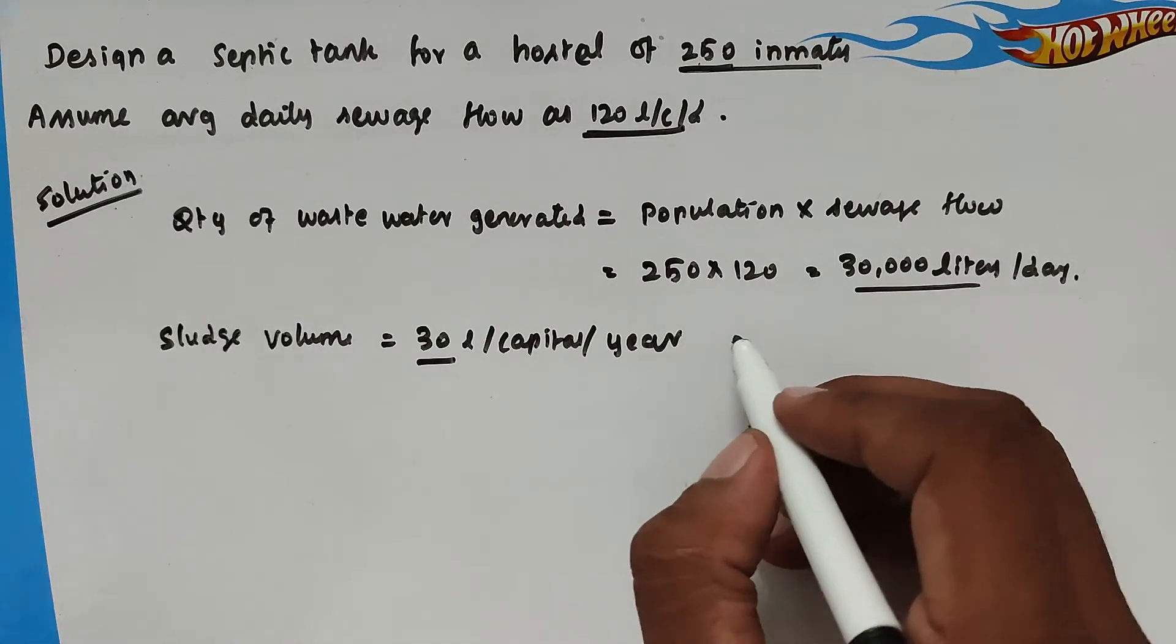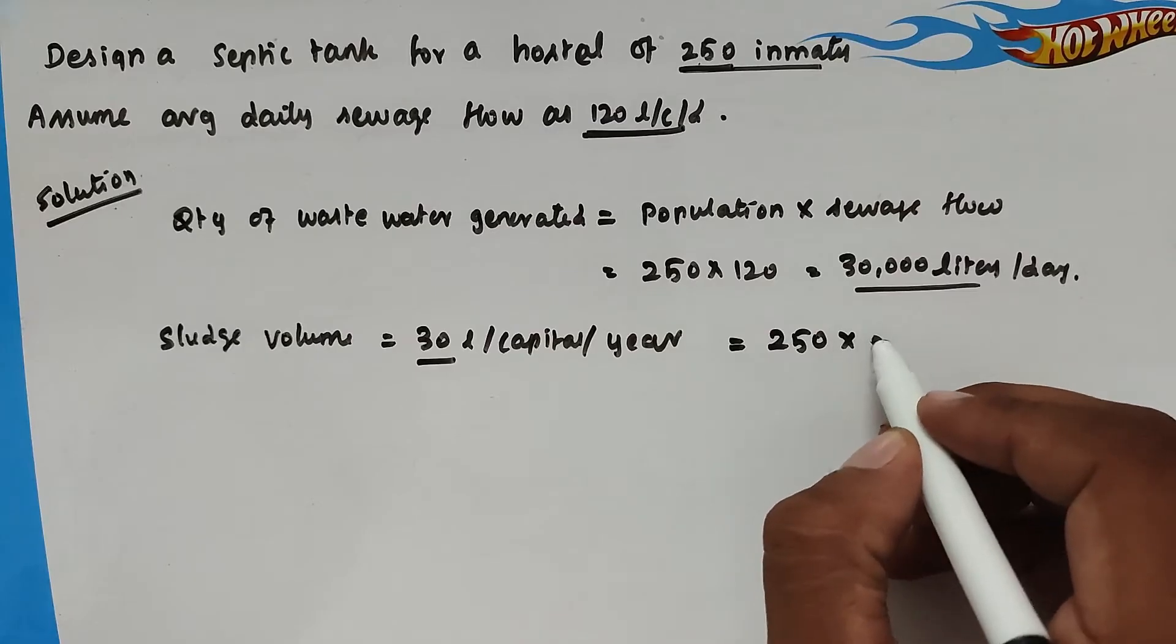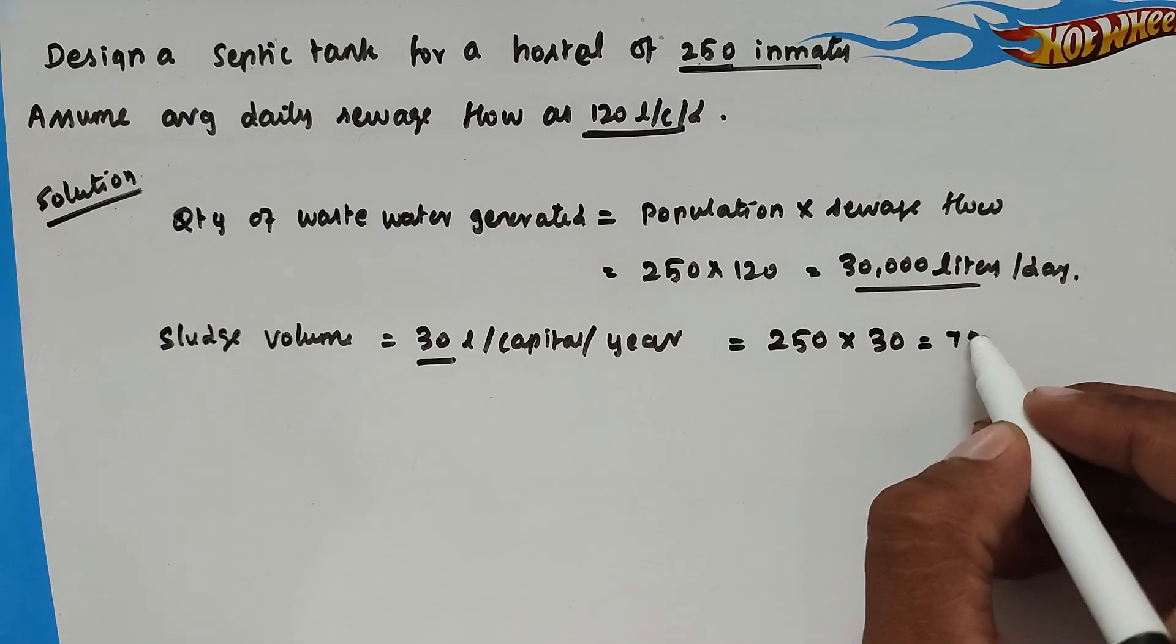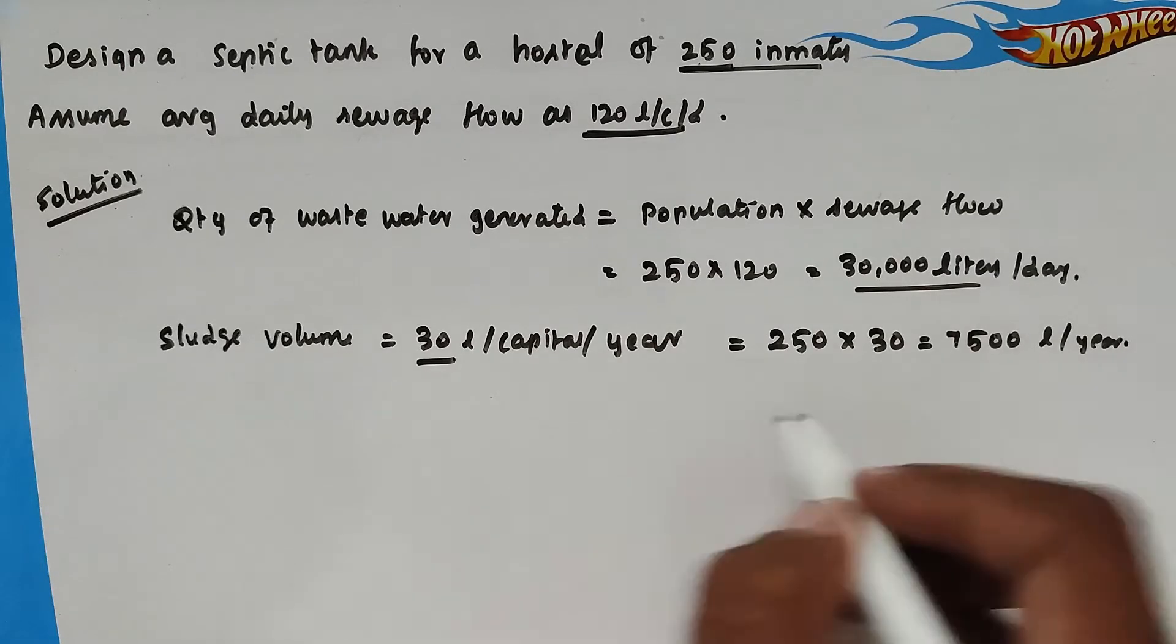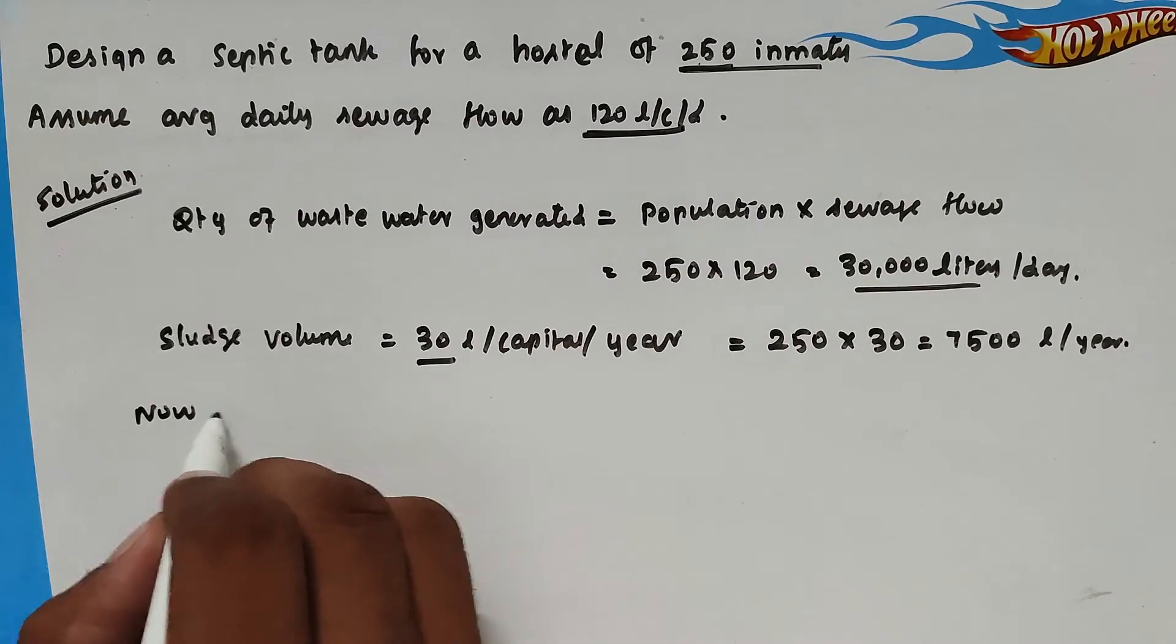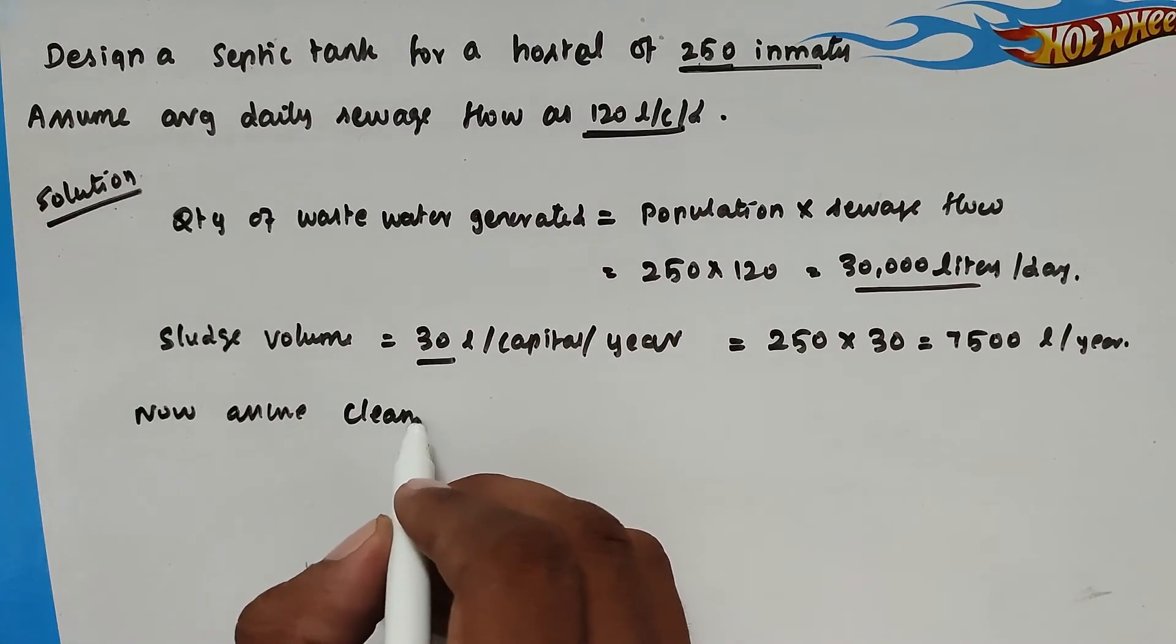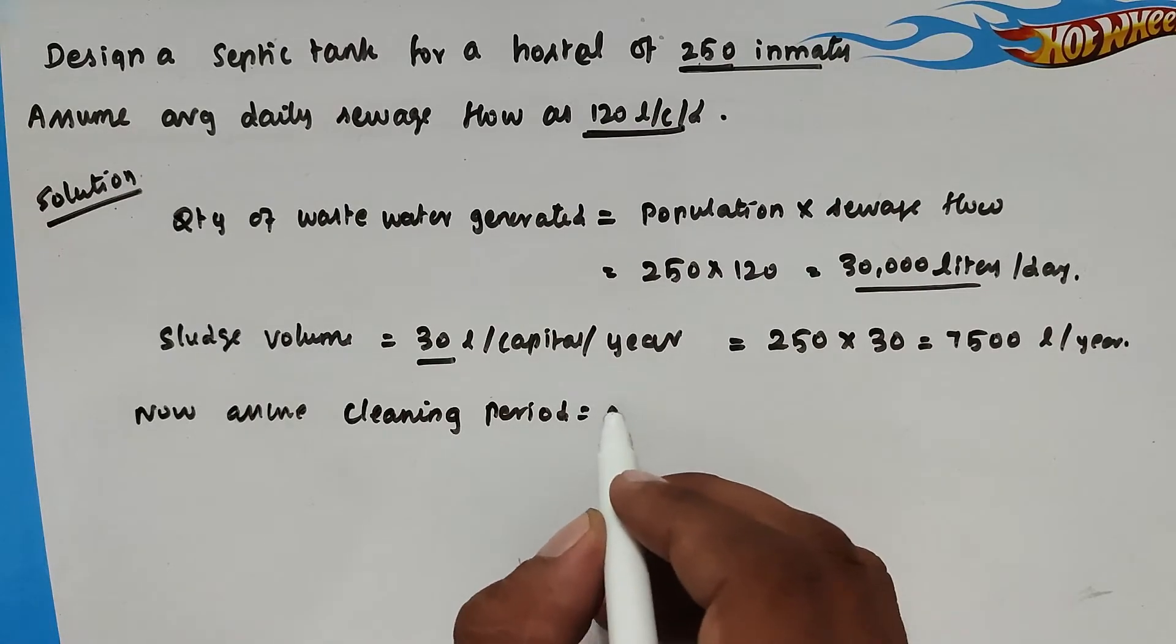So now, the total population is 250. So 250 into 30, the value will be 7,500 liters per year.